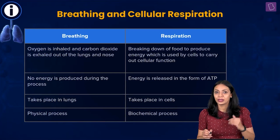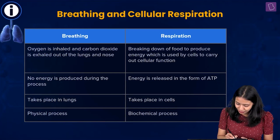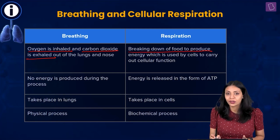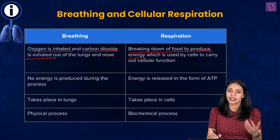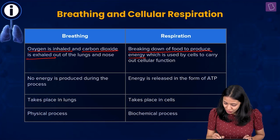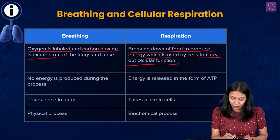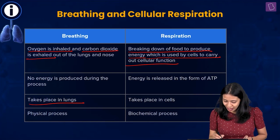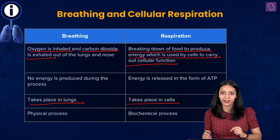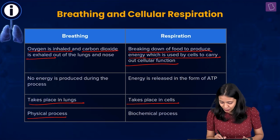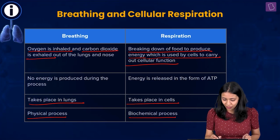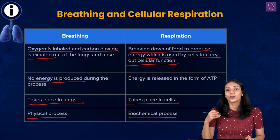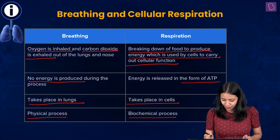Here is a comparison of breathing and respiration. Breathing involves inhaling oxygen and exhaling carbon dioxide through the lungs and nose. Respiration involves breaking down food to produce energy for cellular metabolic activities. Breathing takes place in the lungs — air exchange between atmosphere and lungs — whereas cellular respiration takes place in every living cell. Breathing is a physical process; respiration is a biochemical process involving various enzymes. Breathing requires and consumes energy; respiration produces energy in the form of ATP.